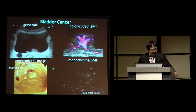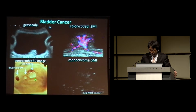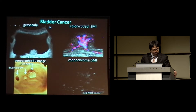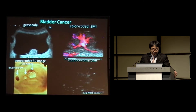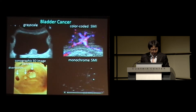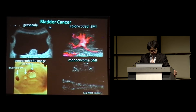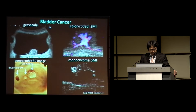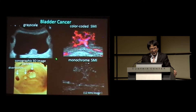This is a case of bladder cancer. There are a couple of tumors and also a diverticulum. This 3D ultrasound image helps you understand the shape of these lesions. On color-coded SMI, you can see a branch-like structure of this tiny tumor. And monochrome SMI, which is more sensitive to lower blood flow, shows very fine vascular structures that confirm the diagnosis of bladder cancer.